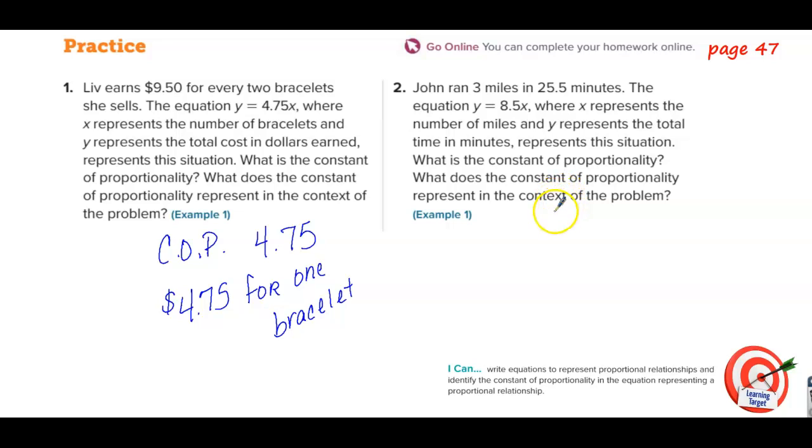Number two, John ran three miles in 25.5 minutes. The equation y equals 8.5x, where x represents the number of miles and y represents the time in minutes, represents this situation.